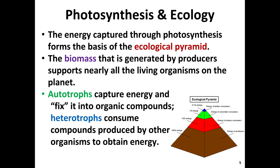We need many, many producers in an ecosystem in order for that ecosystem to be sustainable. Not all of the energy produced by producers is transferred to the next trophic level — some of that energy is actually being lost to heat and other sources and is not transferred up. To compensate, we need to increase the number of producers so that primary consumers, secondary consumers, tertiary consumers can be fed.